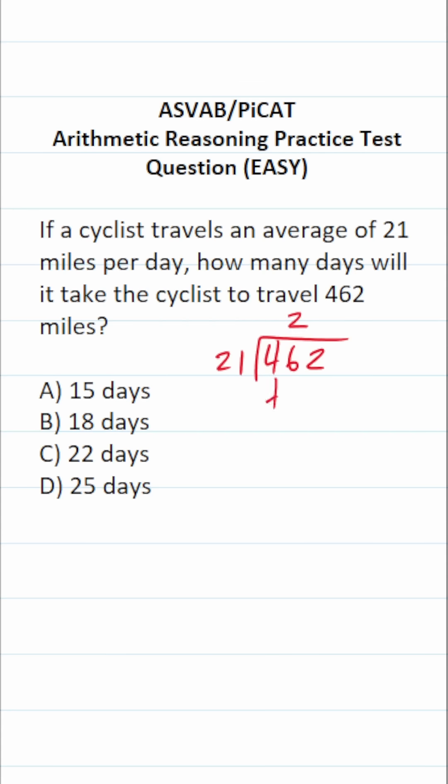21 times 2 is going to be 42. Now, if you couldn't do that part mentally, you could always do it off to the side. 21 times 2: 1 times 2 is 2, 2 times 2 is 4.